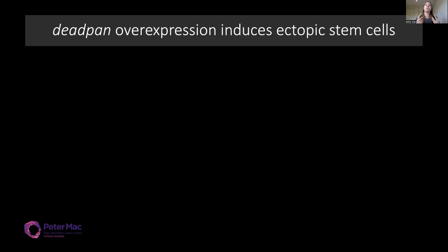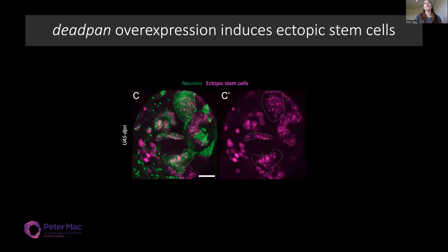Within the screen, when we overexpressed Deadpan we got the induction of ectopic stem cells via de-differentiation. Outlined here are clones — patches of cells overexpressing Deadpan — and you can see in this deep layer of medulla neurons we're getting large numbers of these ectopic stem cells being induced.